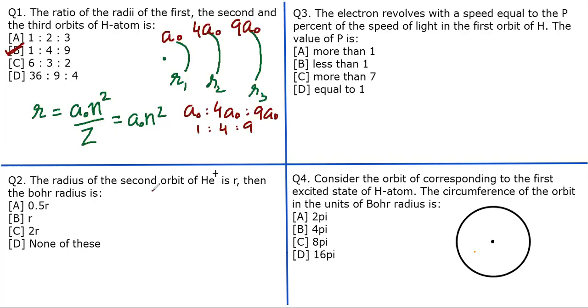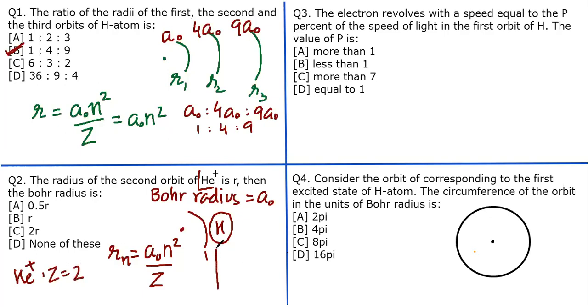We all know that Bohr radius a₀ is basically equal to the radius of the first orbit of hydrogen atom, right? Hydrogen atom has one proton in it. Now we know that general expression of radius for any species is rₙ = a₀ × n²/Z. Now you can clearly figure out for helium plus, Z is 2. So if question says that the radius of the second orbit, so I would say 2² × a₀ divided by Z which is 2, this is equal to r.